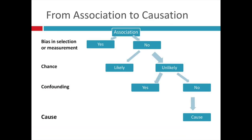Some epidemiologists prioritize ruling out chance, bias and confounding to derive causation from association over Hill's criteria.